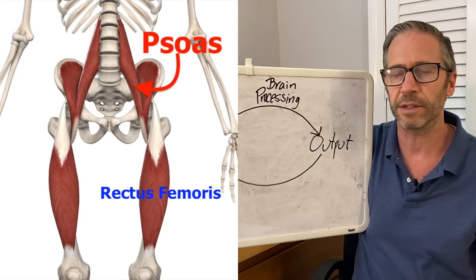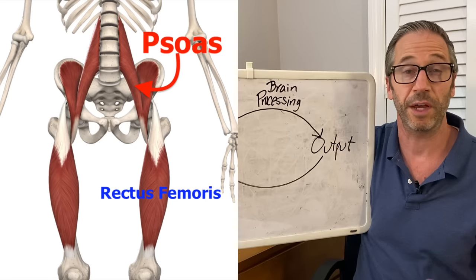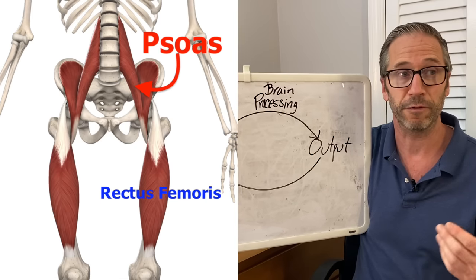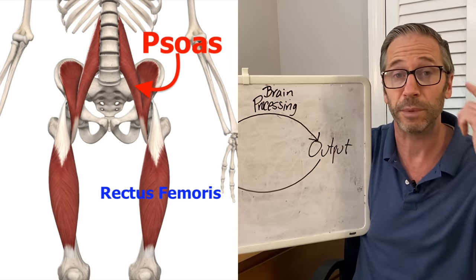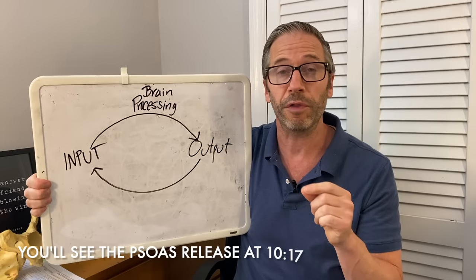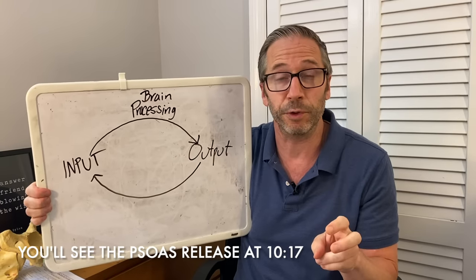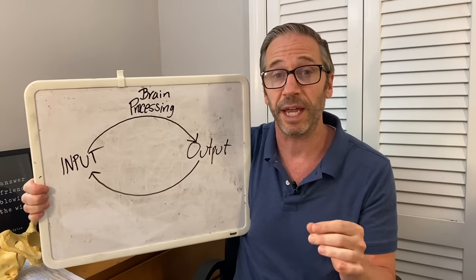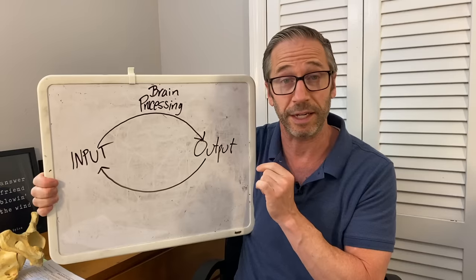If you have a tight or overactive hip flexor, to understand why that is, you really have to understand it from a neuroscience perspective, from a brain perspective. Don't think about it from what the muscle is doing. You have to understand the muscle's behavior as dictated by the brain.